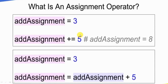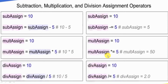Now we use the subtraction, multiplication, and division assignment operators. We used the addition assignment operator in the last slide. In this slide we use subtraction, multiplication, and division assignment operators with the same syntax. In subtraction, sub-assign is equal to 10, and we subtract 5: sub-assign minus-equals 5. Next is mult-assign equals mult-assign into 10. With the assignment code, mult-assign star-equals 5. Then mult-assign is equal to 10 into 5, so the final value is 50.